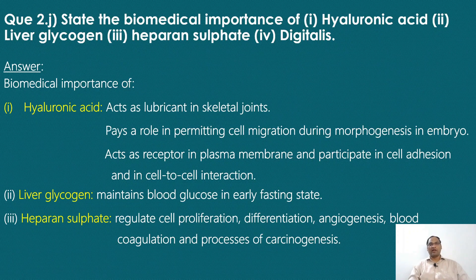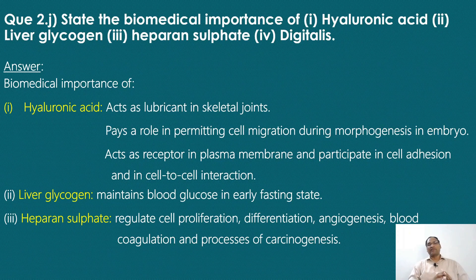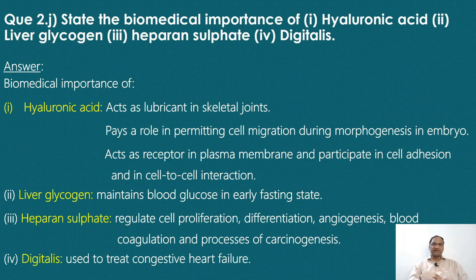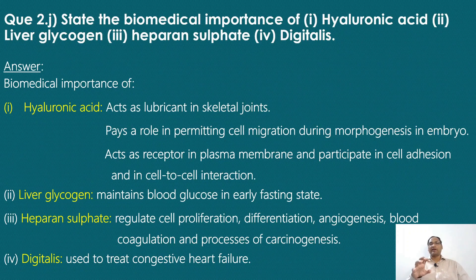Heparan sulfate, along with heparin, regulates cell proliferation, differentiation, angiogenesis, blood coagulation, and the process of carcinogenesis. Digitalis is a drug obtained from a plant. It is used for treatment of congestive heart failure (CCF) because it increases the contractility of the heart.